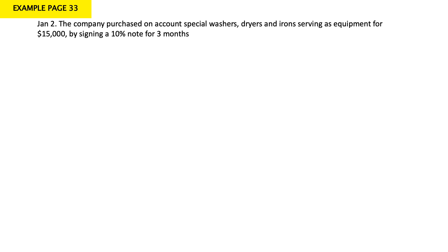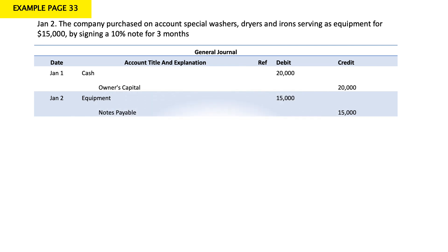Therefore, my equipment increased by $15,000 and my notes payable increased by $15,000. My journal entry on January 2 is: debit equipment for $15,000, and credit notes payable $15,000.